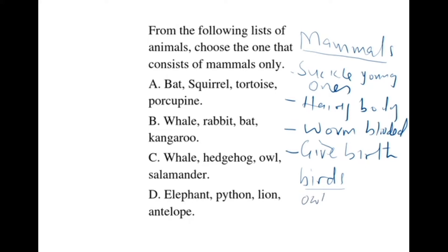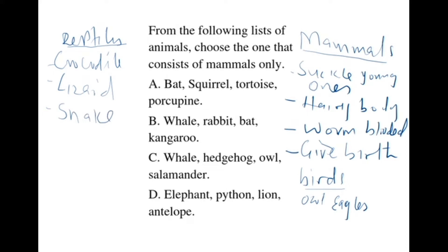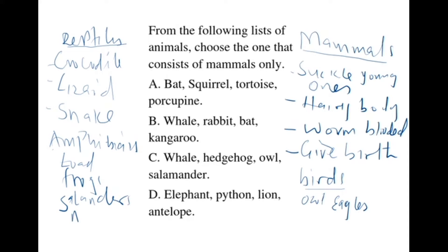They give birth to live young ones. Apart from mammals we have birds, like owl and weaver bird. We have reptiles — crocodile, lizard, snake, etc. We have amphibians like the toad, frog, and salamander.